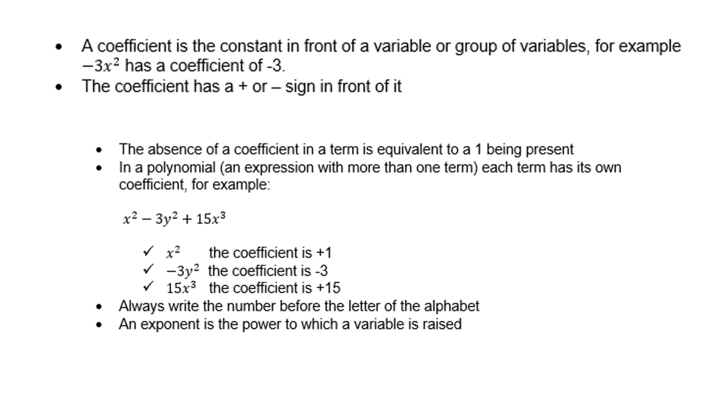The absence of a coefficient in a term is equivalent to 1. In other words, if you apparently don't see anything in front of the letter, you must naturally assume there is a 1. In a polynomial, that is an expression with more than one term, each term has its own coefficient. For example...